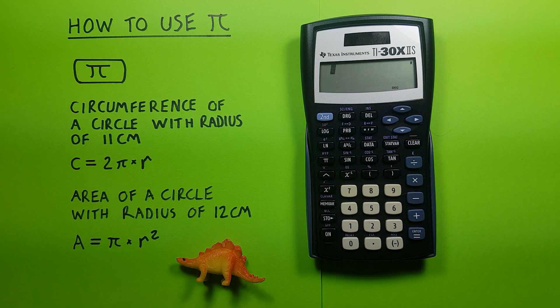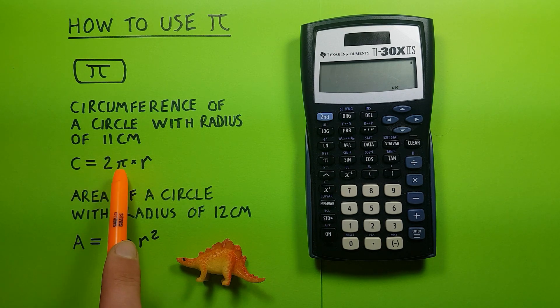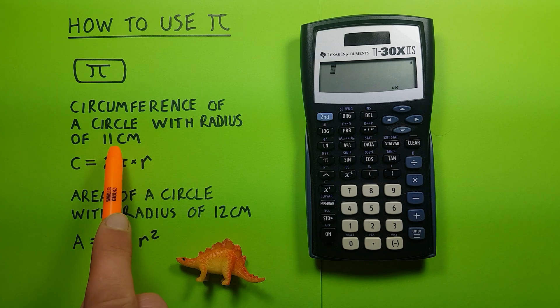This is useful in certain calculations, like for example, let's say we wanted to find the circumference of a circle with a radius of 11 cm. Well, we know the formula for that is 2πr, or 2 times pi times the radius, which remember was 11.